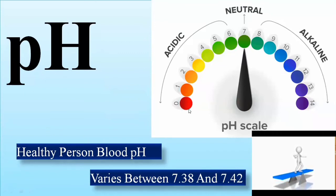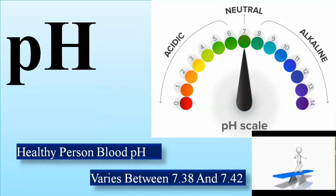For the physiology of the healthy human body, the pH scale has values ranging from 0 to 14. From 0 to 7 indicates an acidic environment, 7 is neutral (as in water), and from 7 to 14 indicates an alkaline environment. For a healthy person, the blood pH ranges between 7.38 and 7.42, which is the normal range.